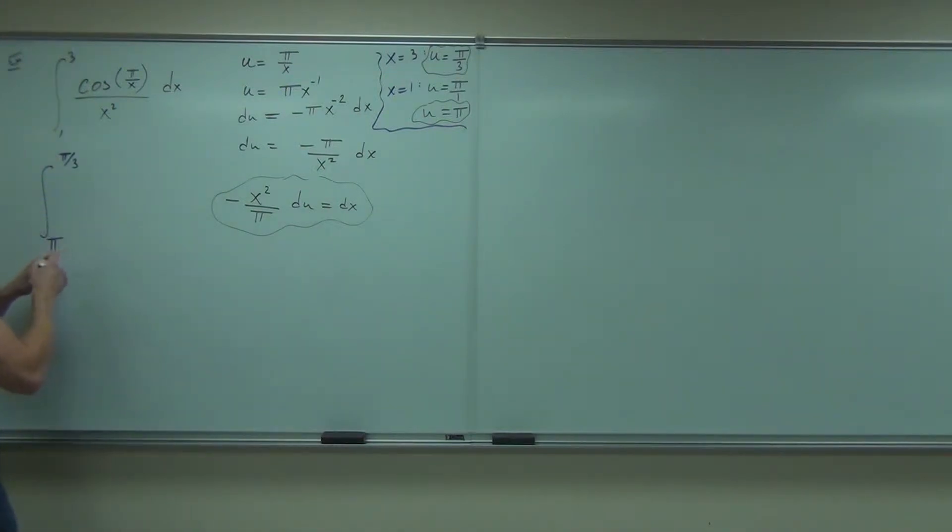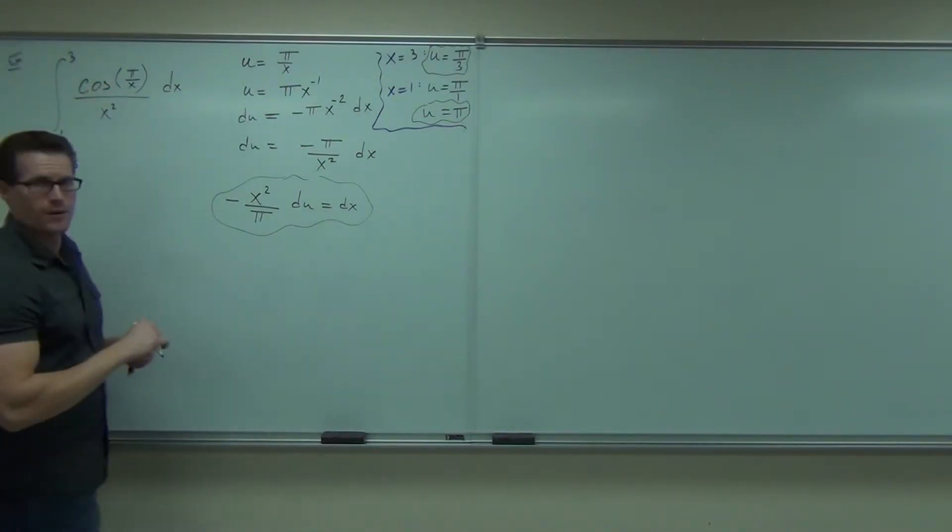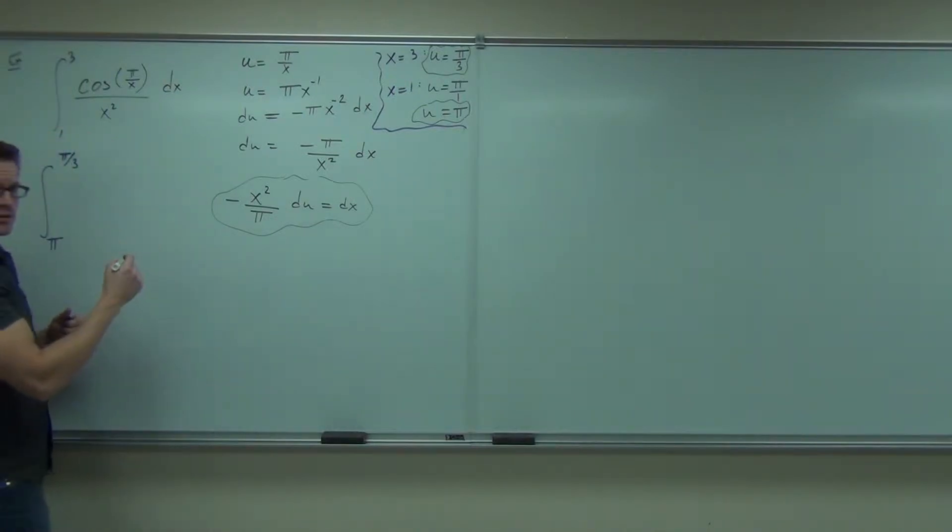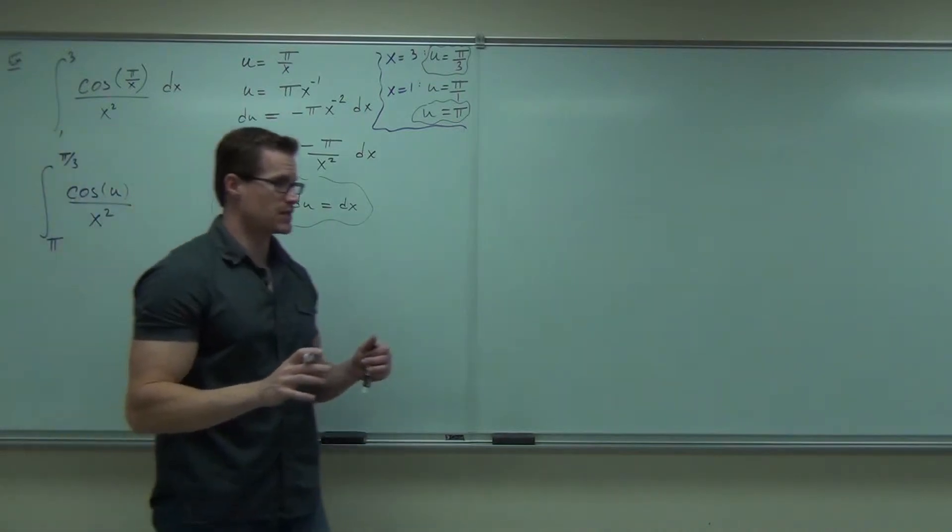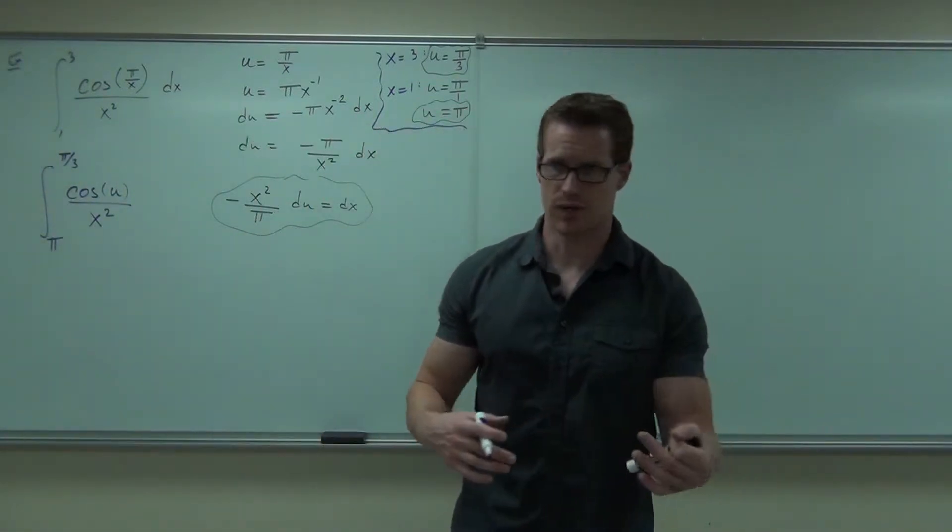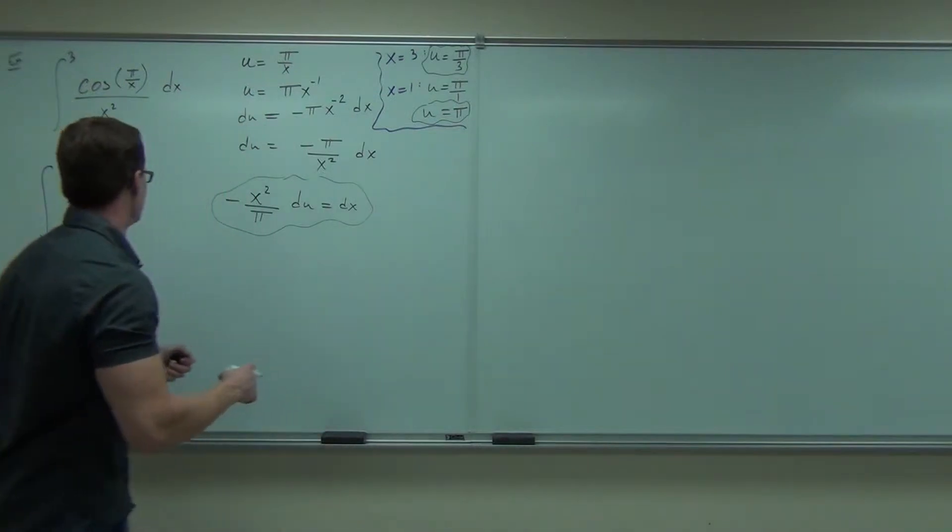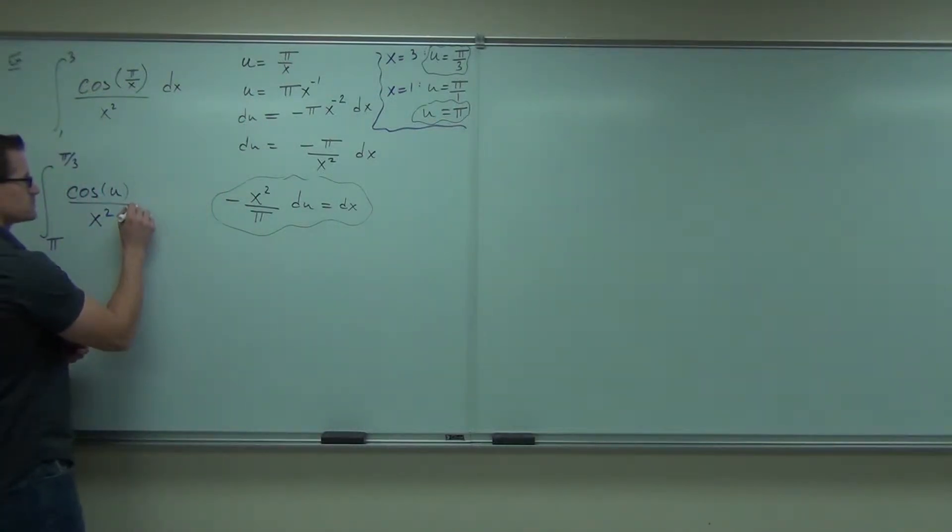Now for the other good stuff. What else is up here? Cosine's still there. If it's not part of your u, it's still there. Cosine of x² is still there for right now. Dx is definitely not there. Instead of dx, you're going to write what dx equals to. That's negative x² over π du.